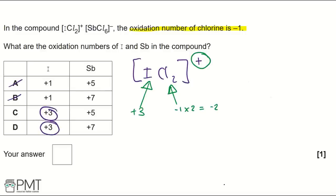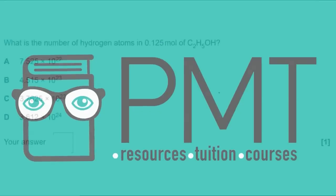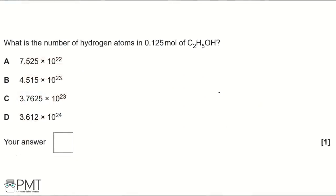Now for the anion SbCl₆⁻: chlorine has oxidation number −1, so −1 × 6 = −6. The overall charge is −1, making the oxidation number of Sb +5, because +5 − 6 = −1. Looking at our options, +5 matches option C. To get the mark for this question, we need to write C in the answer box.